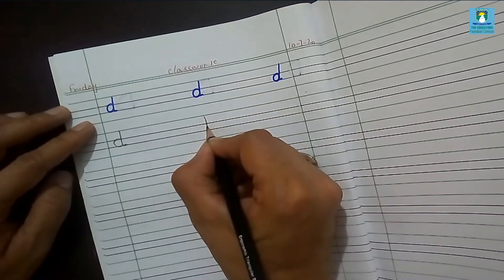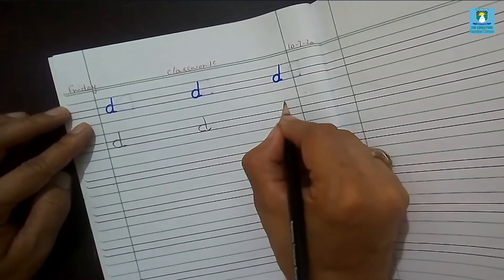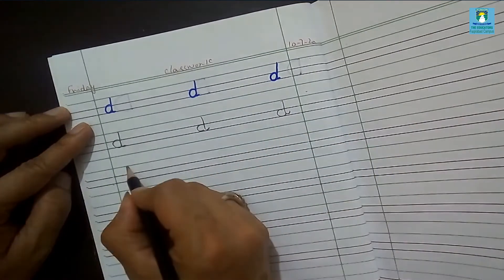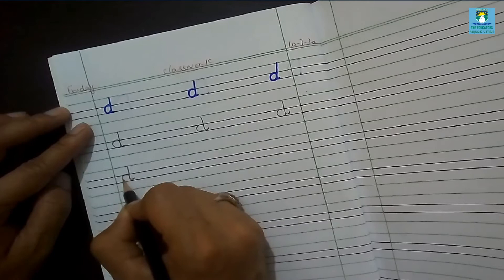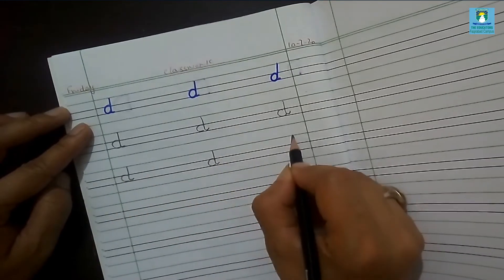You have to write like this. It's small D. What is it? Small D. Draw a line with the tail and then like this. Understand students?